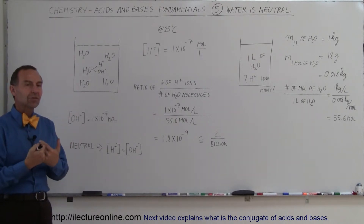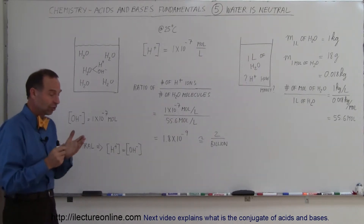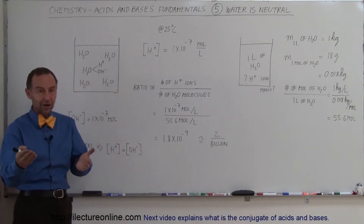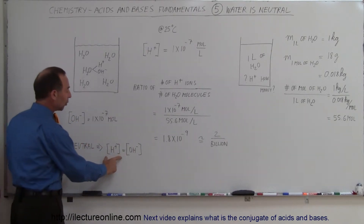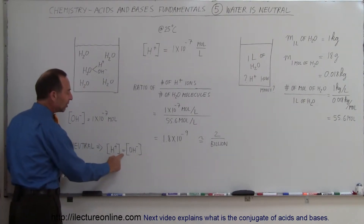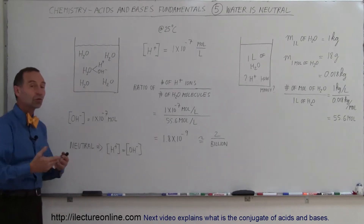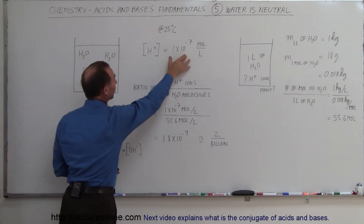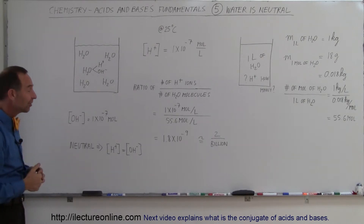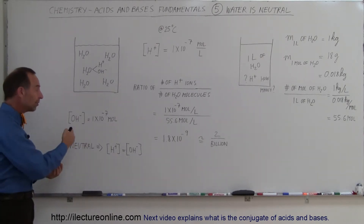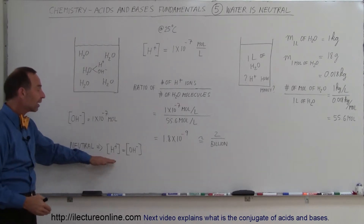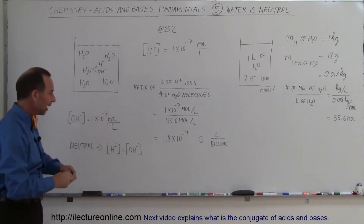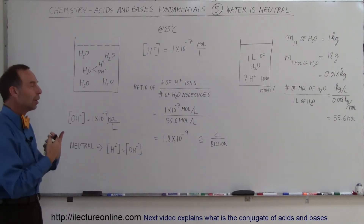That number represents neutrality, because an equal number of hydrogen ions and hydroxide ions dissociate — for every water molecule you get one hydrogen ion and one hydroxide ion. So the concentration of the hydrogen ion equals the concentration of the hydroxide ion, and at that point we say the solution is neutral. That's why we consider water neutral: there are 1×10⁻⁷ moles per liter of hydrogen ion and 1×10⁻⁷ moles per liter of hydroxide ion.